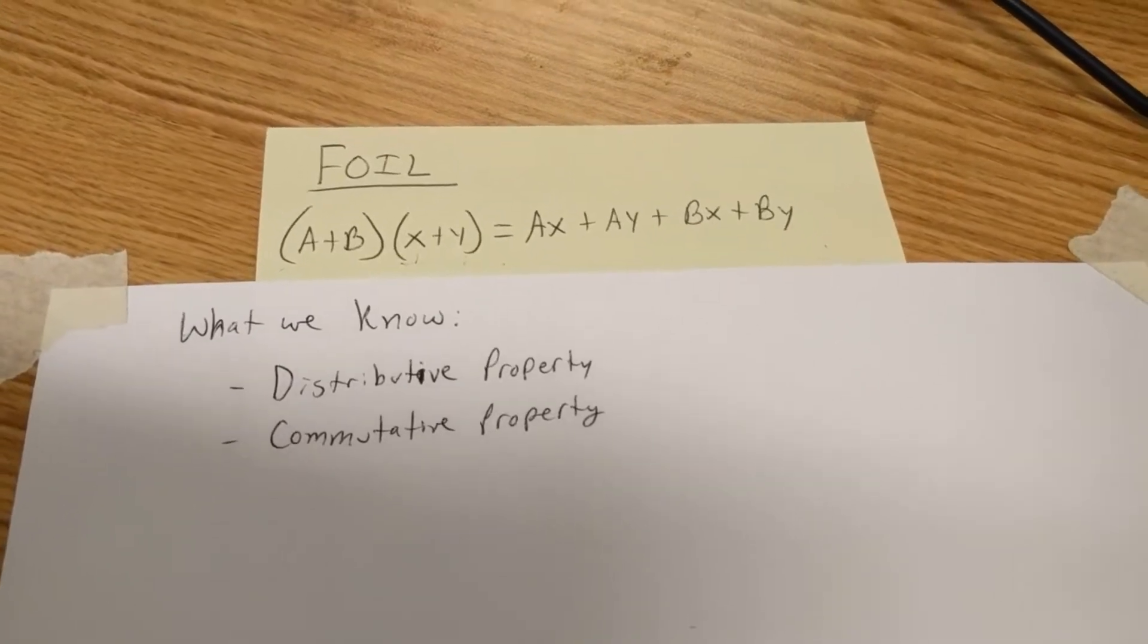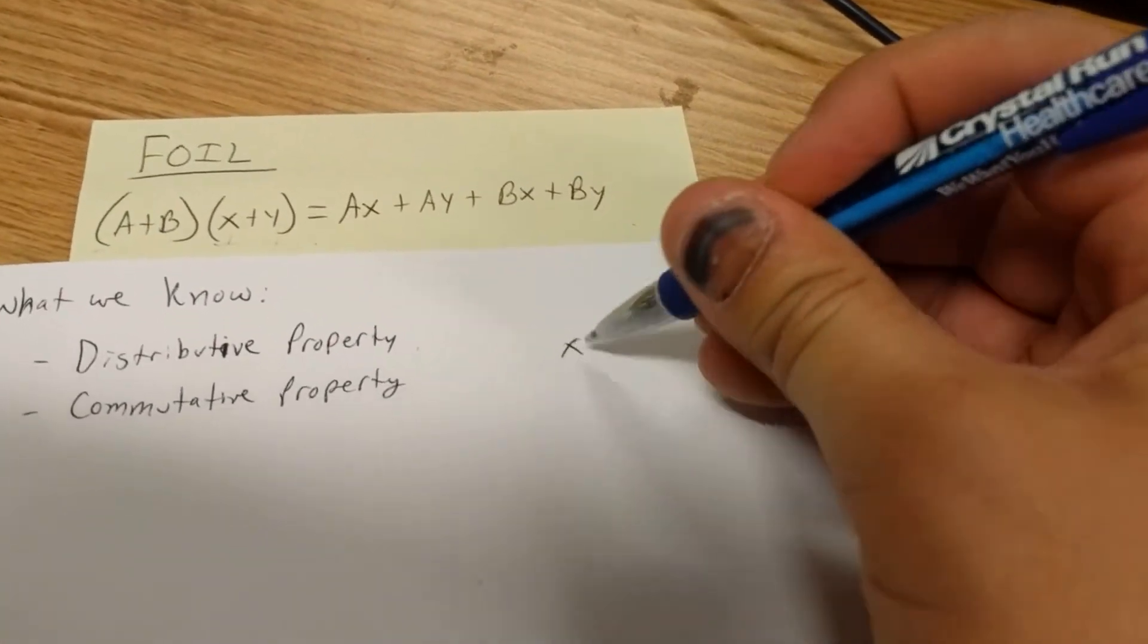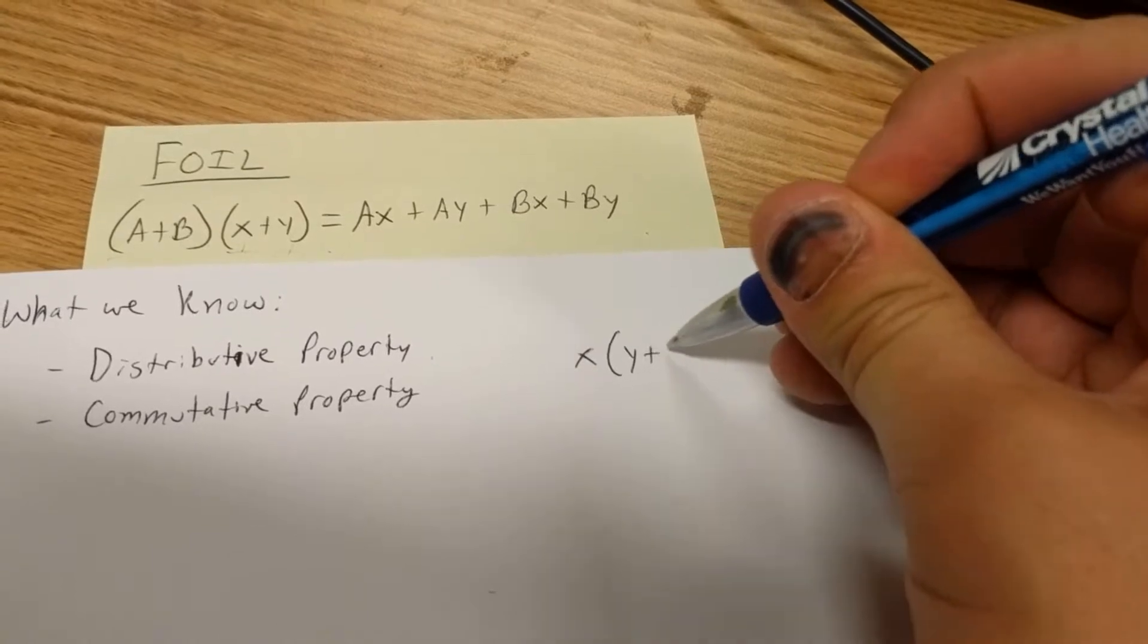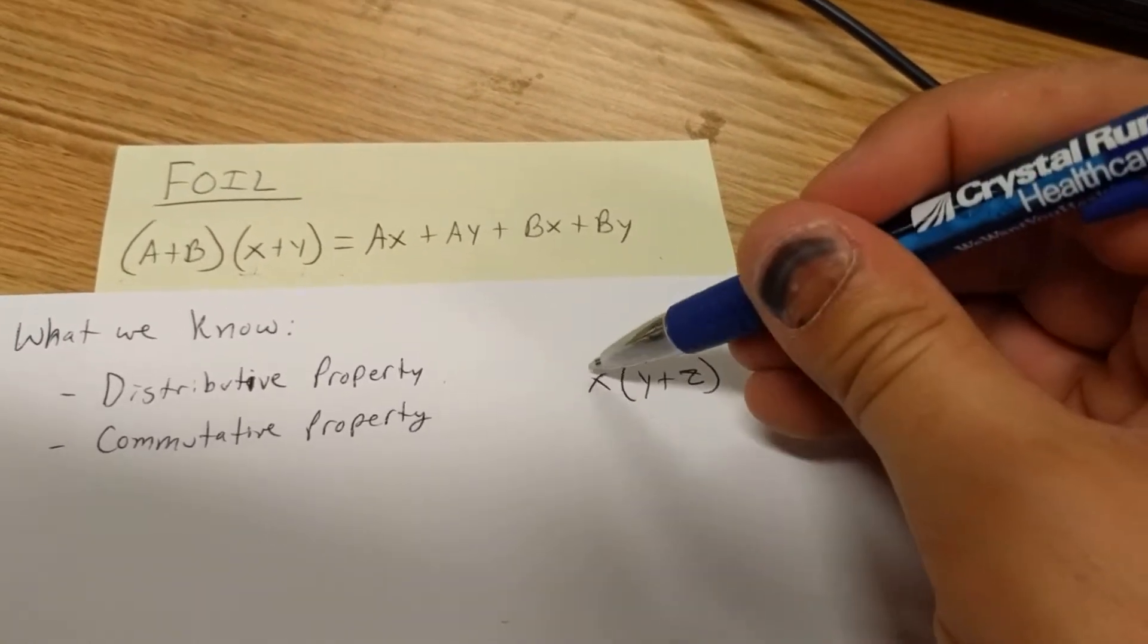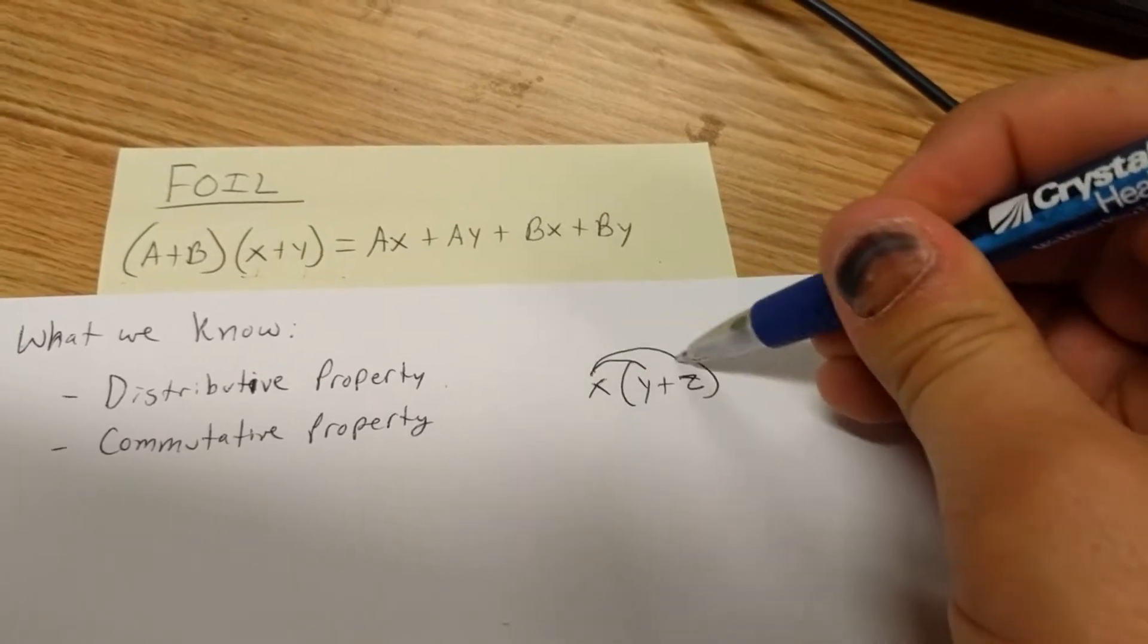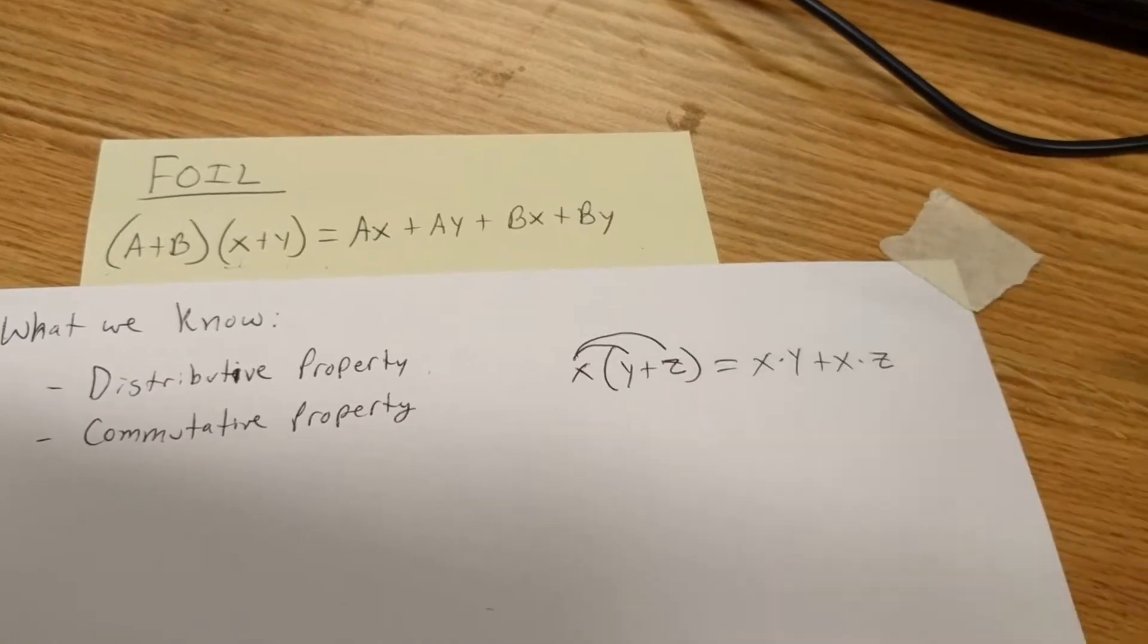There's a couple things that we already know. We know the distributive property. So if we have, let's say, x times y plus z, we know that we can do the distribution: x times y plus x times z.